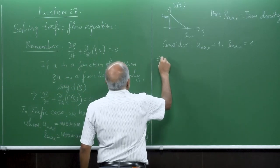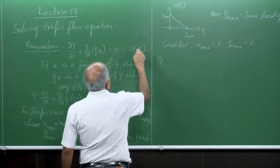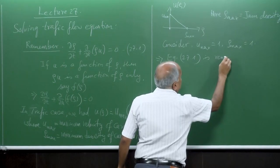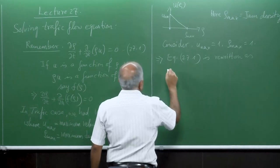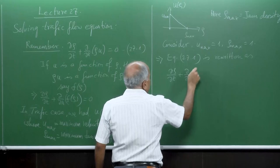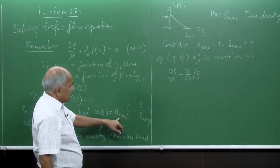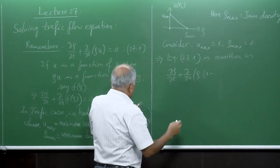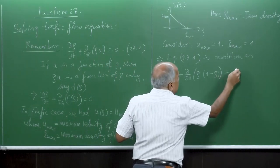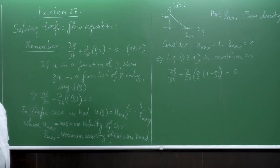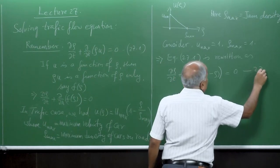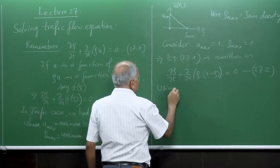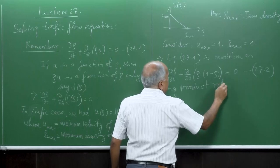This implies our equation 27.1 is rewritten as: del rho by del t plus del by del x of rho times (1 minus rho over rho_max) equals 0. Plugging in u_max equals 1, this becomes del rho by del t plus del by del x of rho times (1 minus rho) equals 0. This is equation 27.2 in conservative form. I can also write it in primitive form using the product rule.